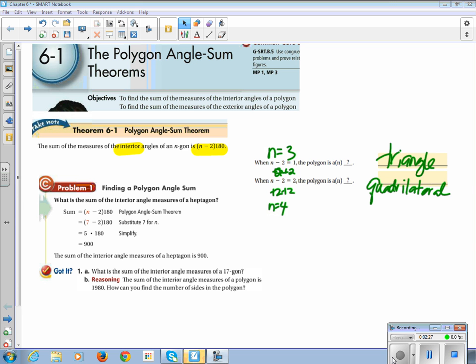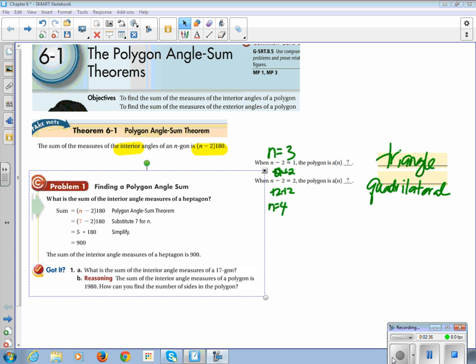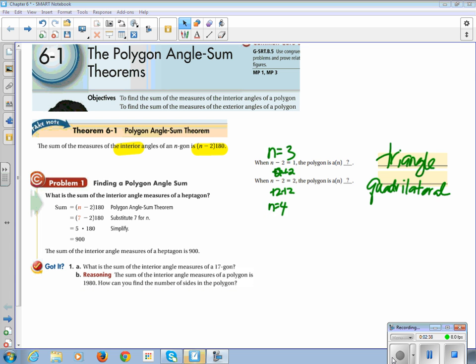What is the sum of the interior angle measures of a heptagon? So a heptagon has seven sides. If you didn't know that, I would recommend Googling it. 7 minus 2 is 5. 5 times 180 is 900. So all the interior angles of a heptagon add up to be 900.